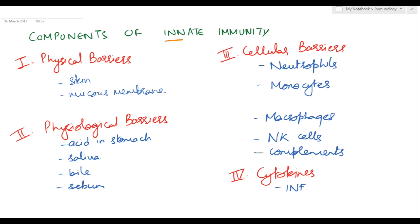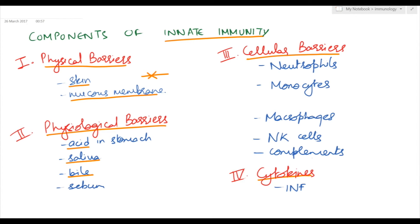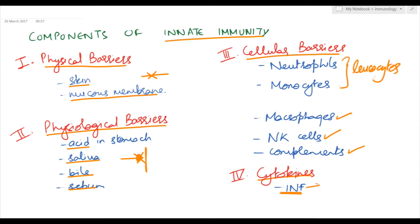Now let's talk about the components of innate immunity. Innate immunity consists of four types of barriers: physical barriers, physiological barriers, cellular barriers, and cytokines. Physical barriers consist of skin and mucous membrane — these stop the pathogen from entering the body. Physiological barriers include acid, saliva, bile, and sebum; they kill the pathogen on the surface of the body. The last type is cytokines, which are interferons produced by virally infected cells to prevent further propagation of viral cells and neutralize them.